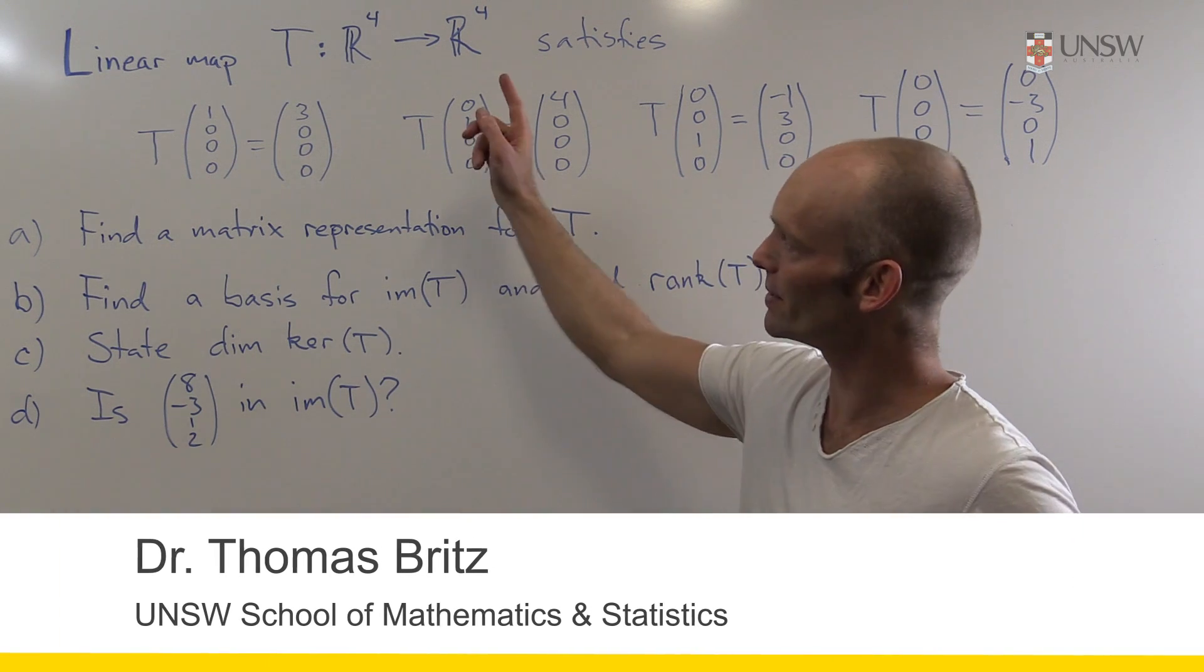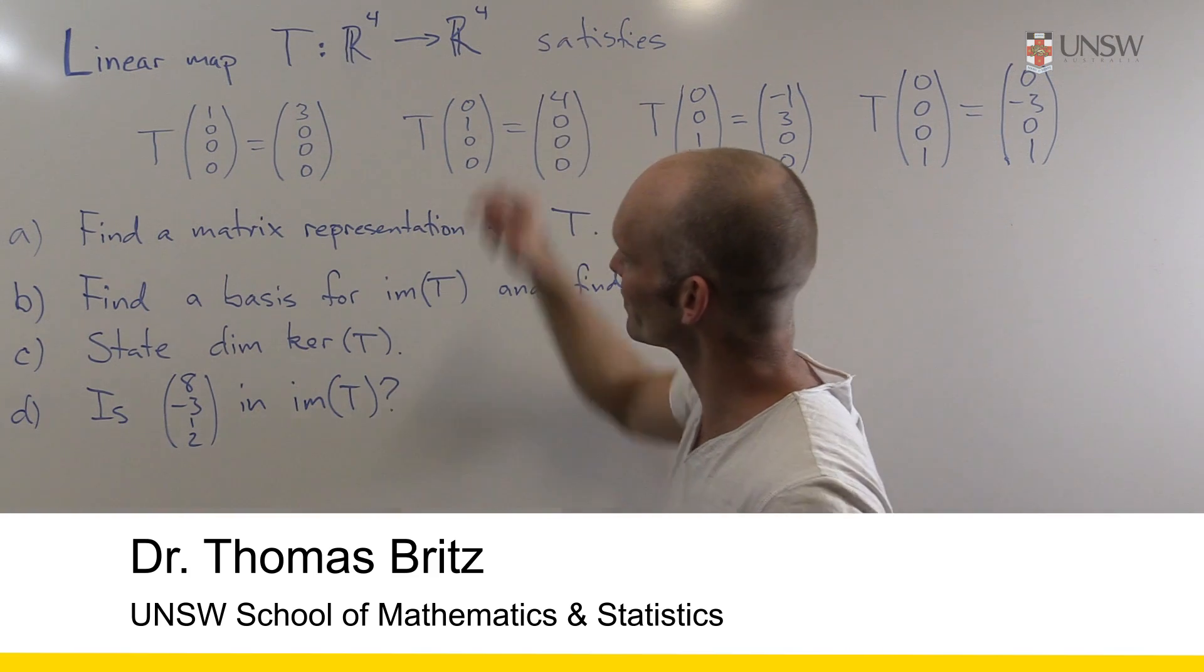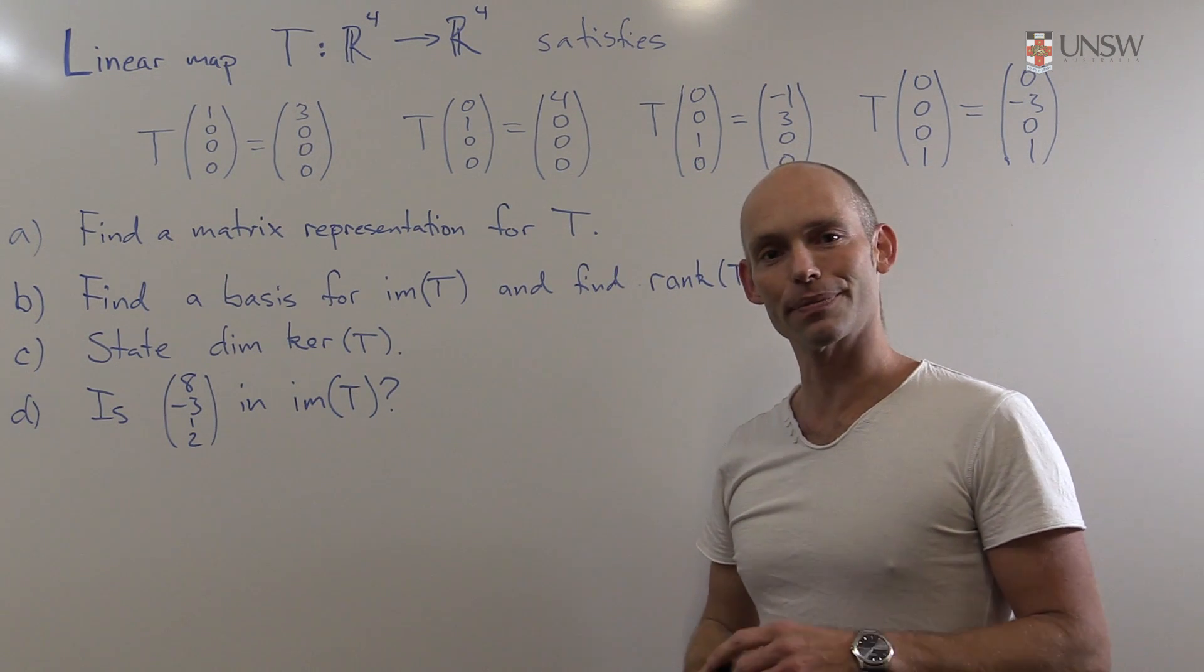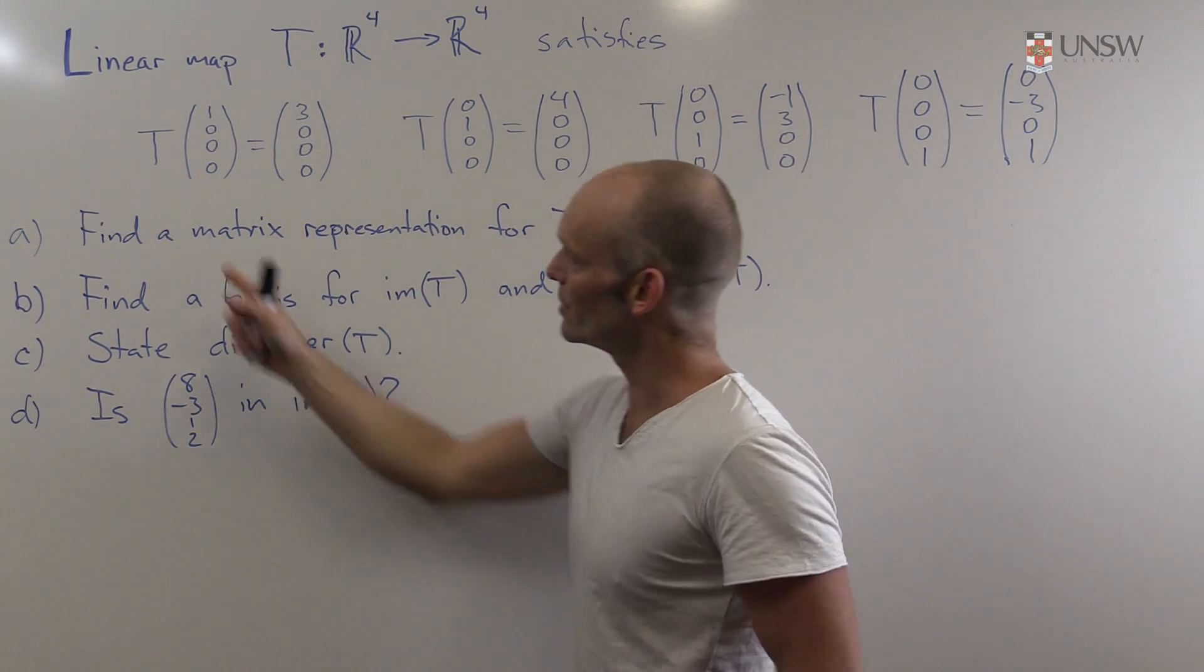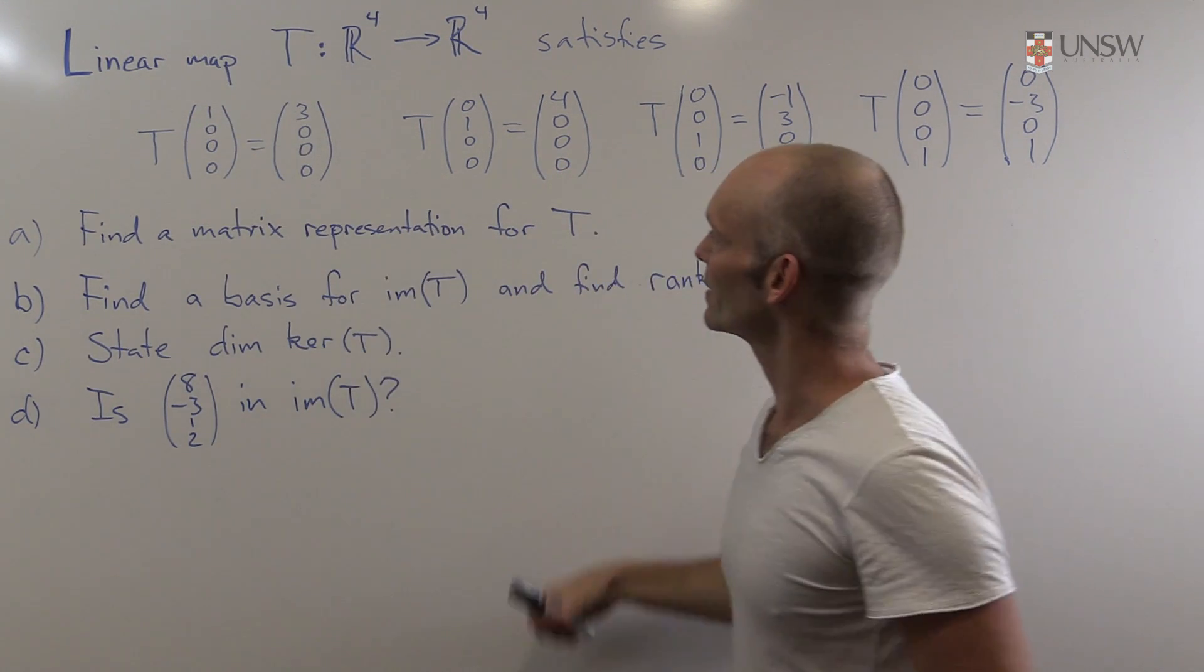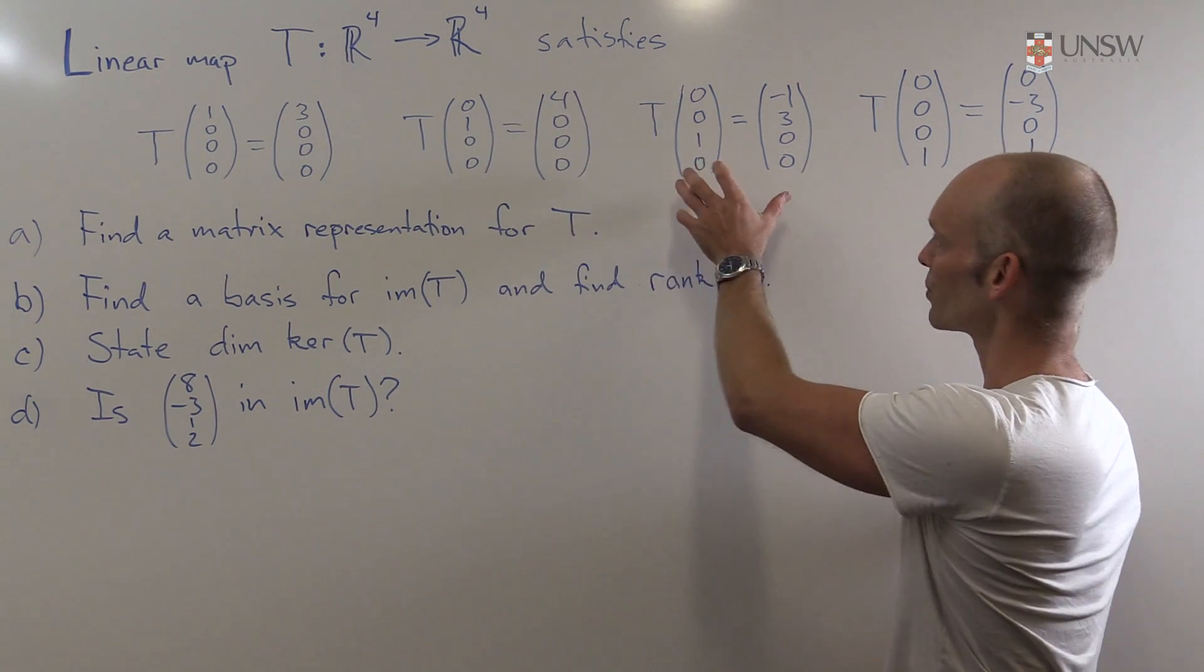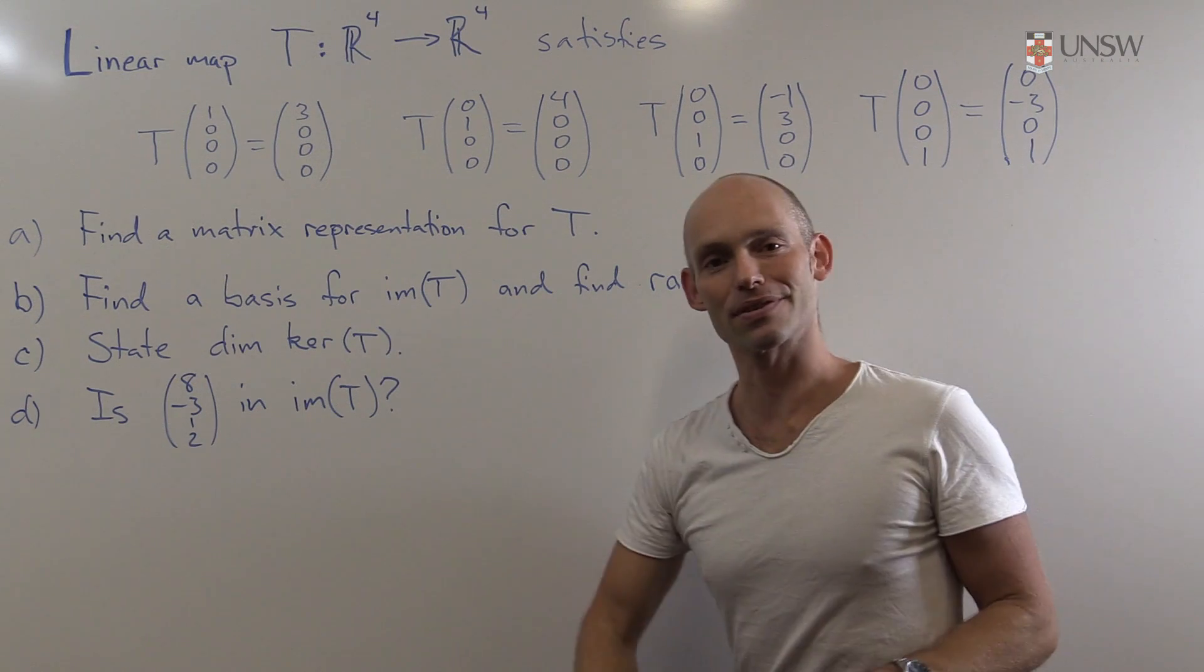Well, in this problem we've got a linear map, so it's a function, and it goes from R^4 to R^4. Now we've been given a bit of information about it. Maybe that T of this vector here, (1,0,0,0), is equal to this vector here. T of this vector here is equal to this vector here, and so forth. We've got two more of those sort of bits of information.